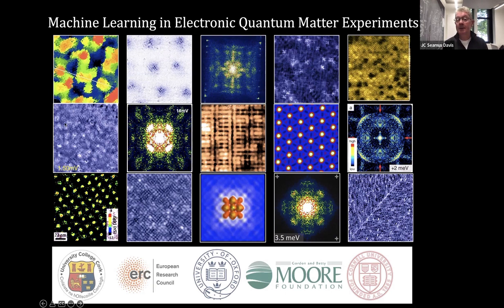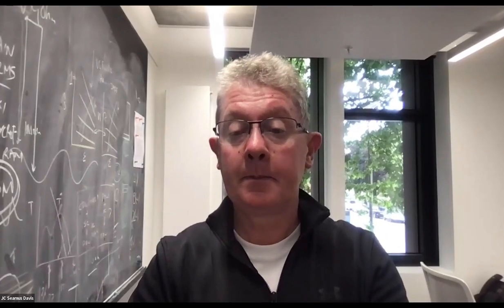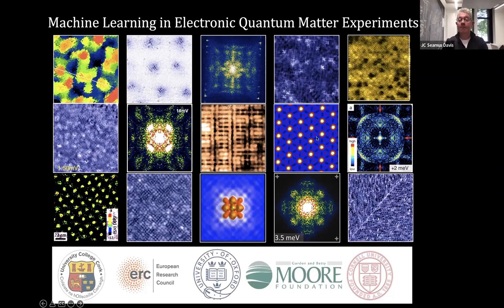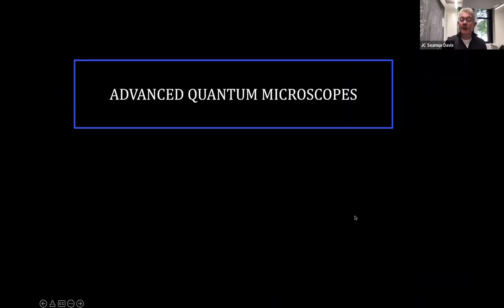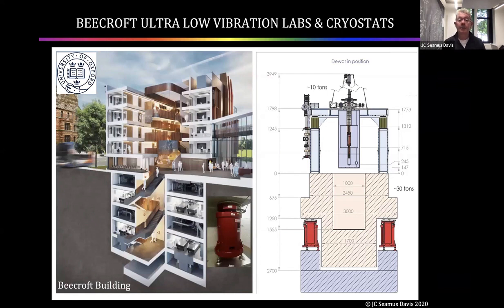I want to talk about how to use machine learning to analyze high data volume electronic quantum matter imaging experiments. First, how do we image electronic quantum matter? Here's a schematic picture of the Beecroft building. I'm over there on the left-hand side looking out at Keble. Three stories underground — more than 30 meters underground — there are our ultra-low vibration labs.